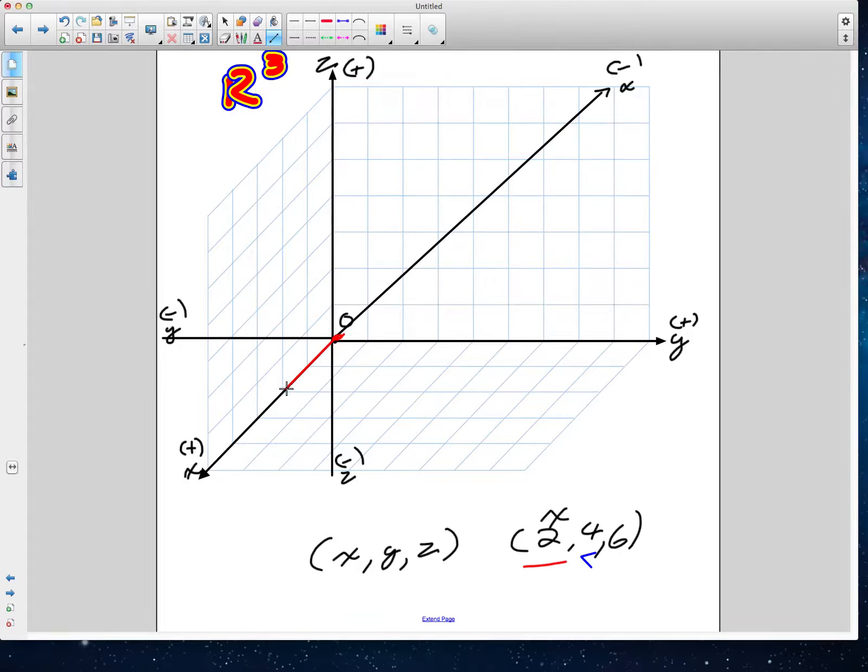We then go four on the y-axis. The y-axis looks like it's moving to our right. So from there, we go over one, two, three, four. I'm now at this point here. Or in other words, that would be four across on our y-axis there. We move that down a bit.